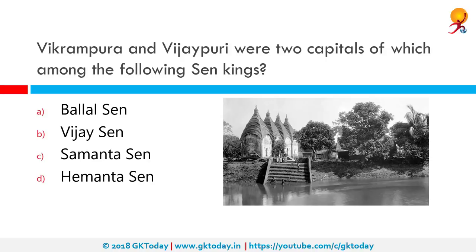Vikrampur and Vijayapuri were two capitals of which among the following kings of the Sen dynasty? The correct answer is Vijayasen. Vijayasen was the son of Hemanta Sen and succeeded him as the Sen dynasty ruler of Bengal. He conquered Bengal fighting the kings of Gauda, Kamarupa and Kalinga. He had capitals in Vijayapuri and Vikrampur.